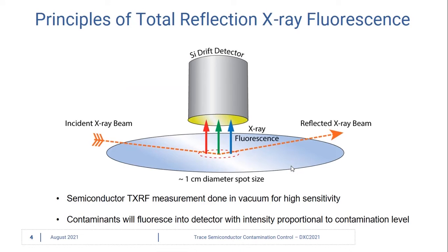In the TXRF measurement, we are operating well below the critical angle so all our x-rays simply bounce off the surface. We have a one centimeter diameter spot size defined by the silicon drift detector that sits very close to the surface of the wafer to give us good sensitivity.